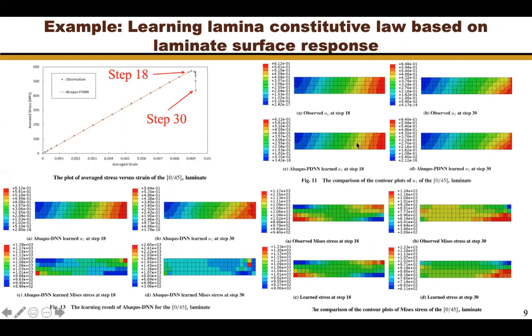These contour plots present the comparison between observed and learning displacement and stress. Again, these plots show that the observed and learning displacement and strain agree with each other very well. Note that the stress is derived from Abaqus and was not used to form the loss function. This means that Abaqus-PDNN can learn the damage constitutive law very well for this scenario.